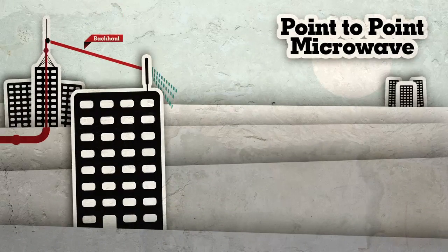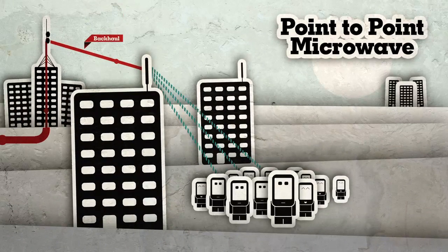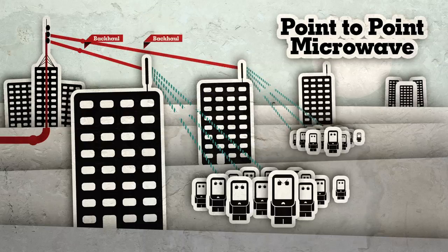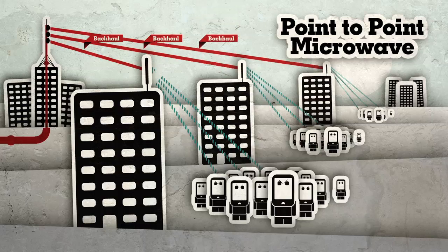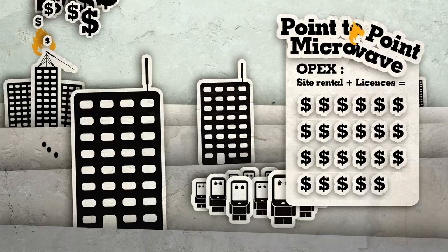Traditional point-to-point microwave eliminates expensive trenching, but lack of available spectrum and narrow channels limit the bandwidth available. On top of that, OPEX will rise as site rental expenditures increase on crowded towers and MNOs are forced to increase spending on spectrum licensing fees.